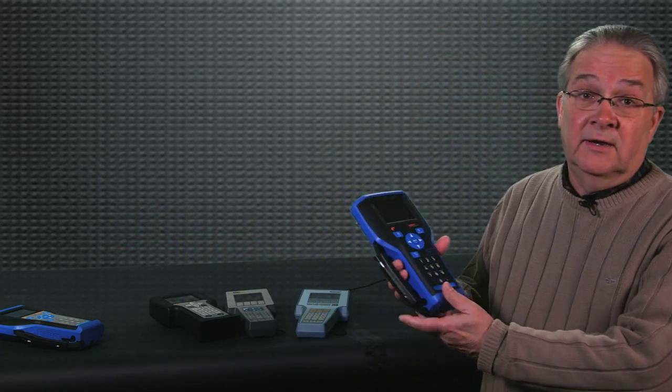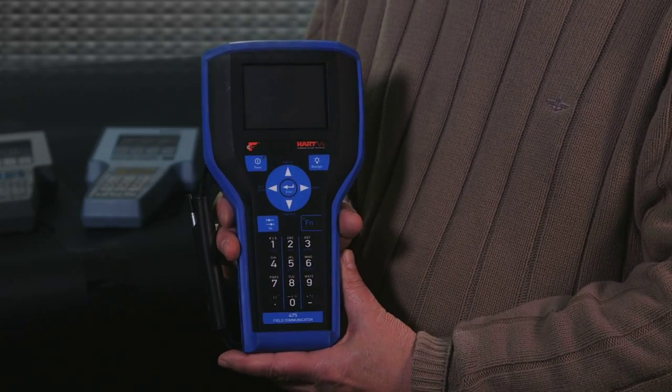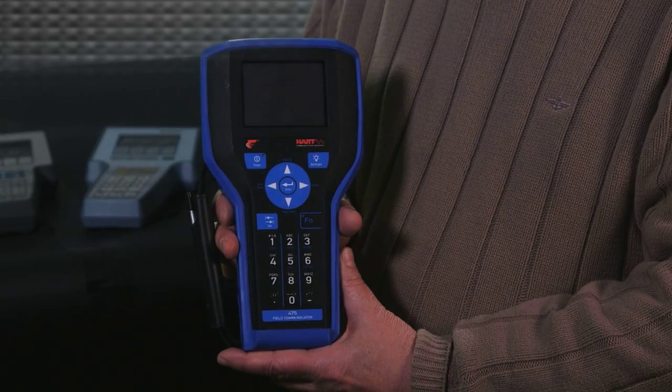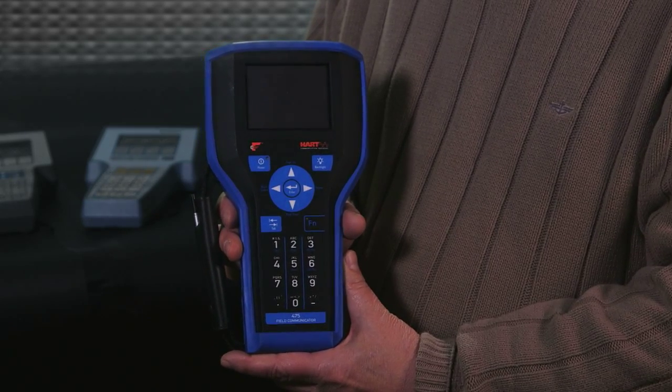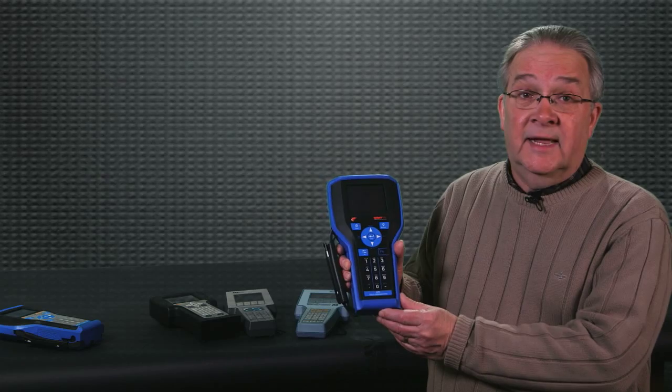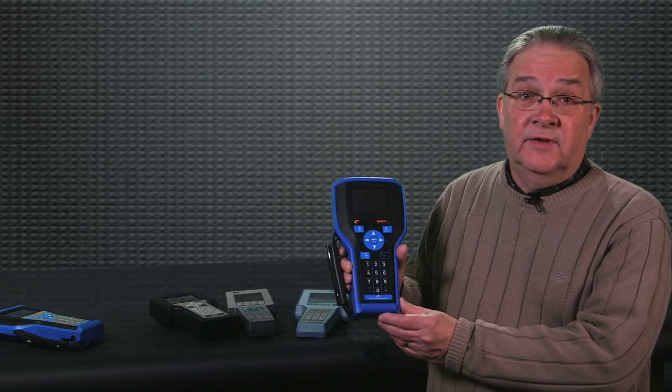In 2009 the 475 field communicator was introduced. This was smaller, faster, had a color screen, lithium-ion battery, and Bluetooth communication, and it is the standard in the industry today as far as field communicators.